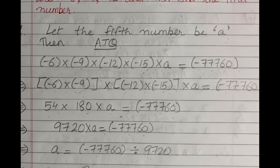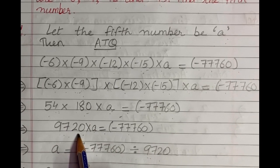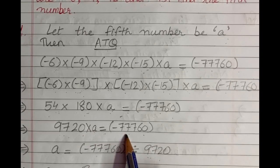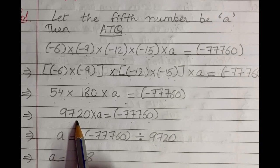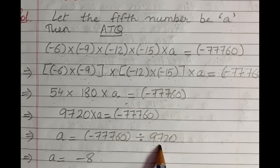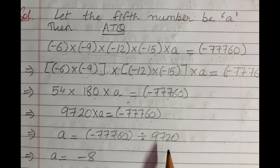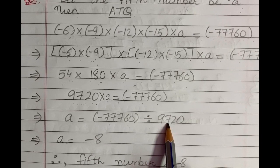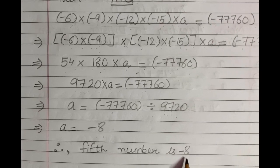Since 9,720 is multiplied on the LHS, on shifting it to the RHS it will divide. On dividing -77,760 by 9,720, we will get -8 as the answer. Therefore, the fifth number is -8.